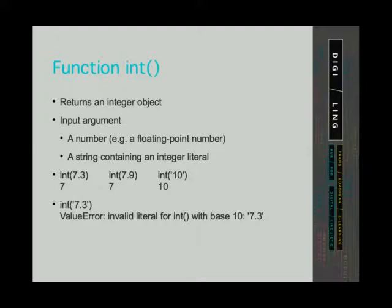An integer function or int returns an integer object. As an input argument it can take a numerical value like for example a floating point number. Also it can take a string containing an integer literal. The syntax of a function is the name of the function, in this case int, and in round brackets is the object we call the function on. For example 7.3. In the examples you can see that the int function called on 7.9 is 7. This function does not round the numbers, it just returns the integer part of the floating point number. If we call the function on a string containing digits 1 and 0, it will return a 10.